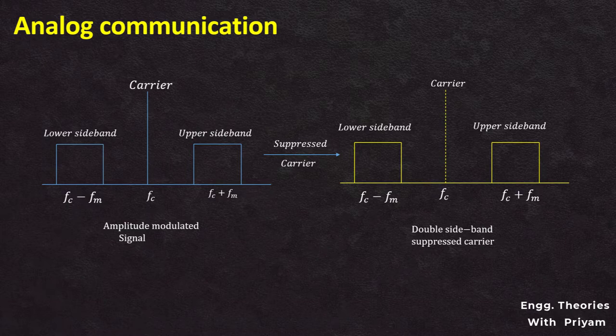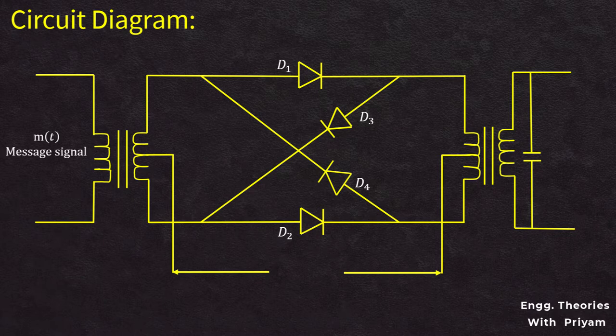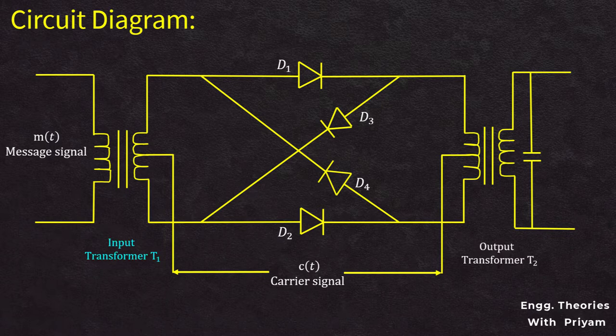The ring modulator circuit consists of four non-linear devices or diodes: D1, D2, D3, and D4; a modulating signal source m(t); a carrier signal source c(t); an audio frequency transformer T1; and a radio frequency transformer T2.